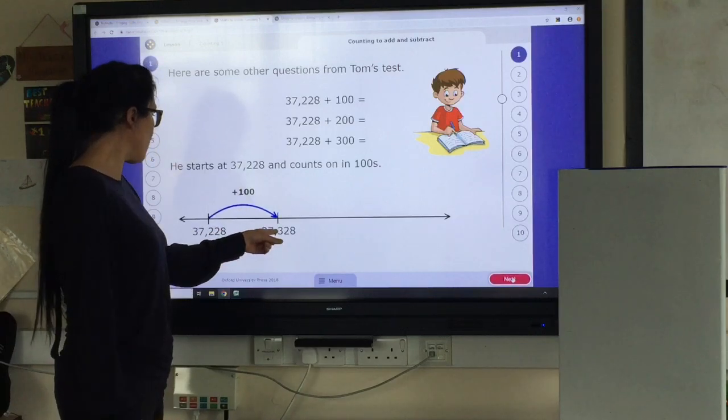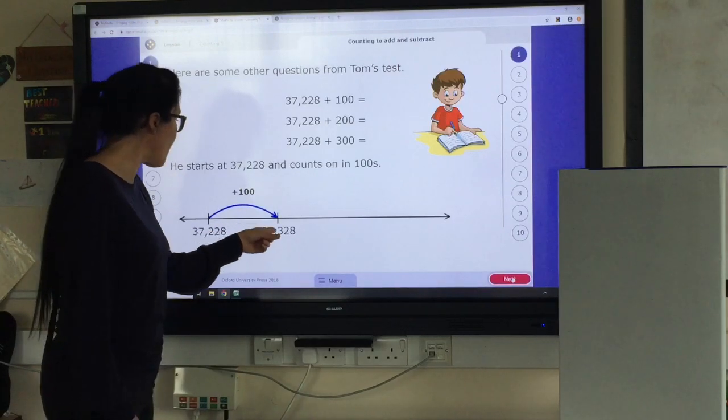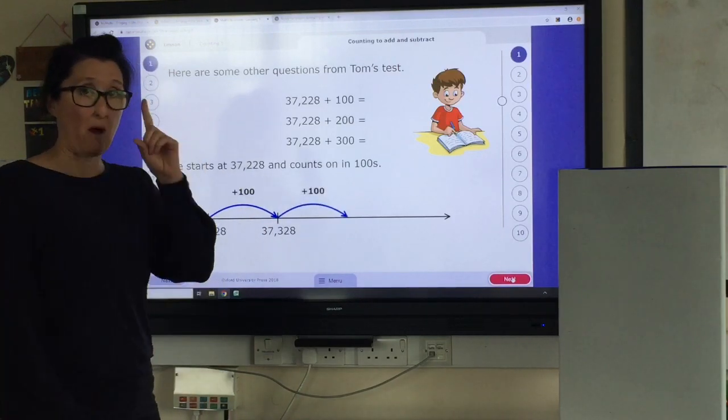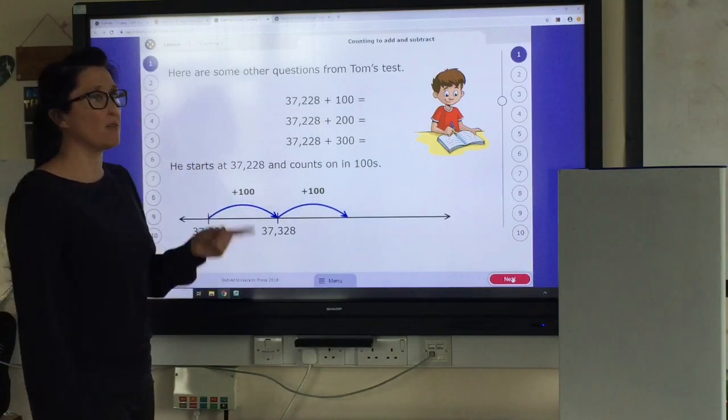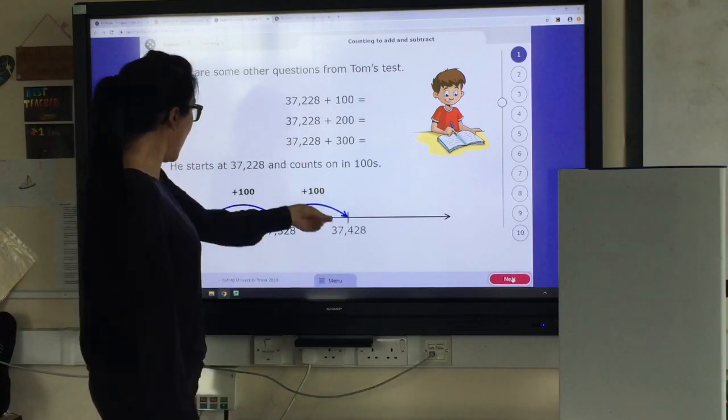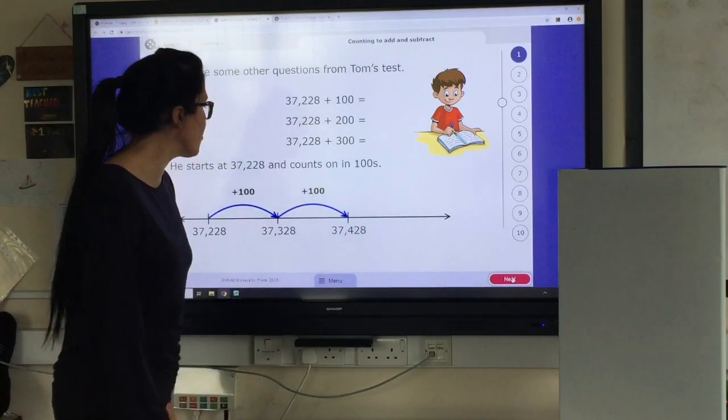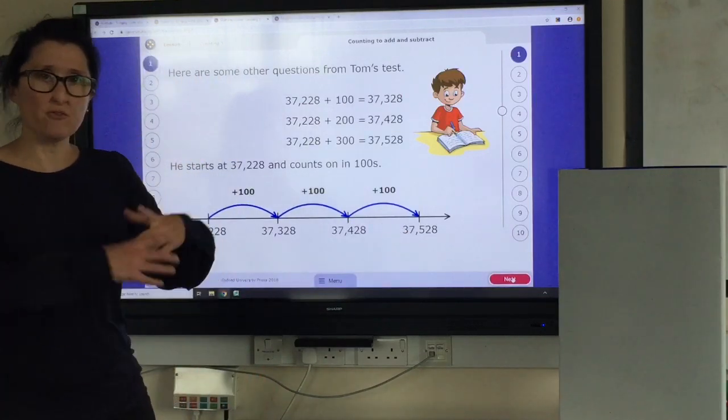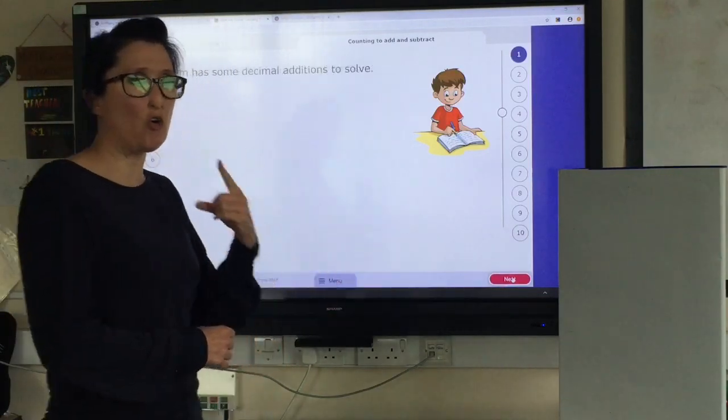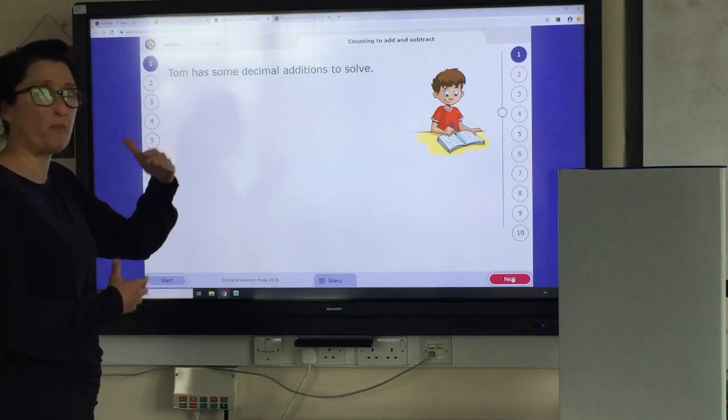We add on 100 and we've gone on to 33,328. That 100's, that place value column, that 100's place value column has gone up by 1. And another 100, 37,428, add on another 100, 37,528. Every time it's that 100's column that's moved up by 1.